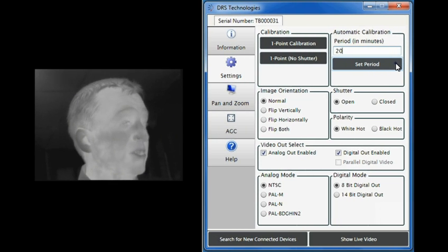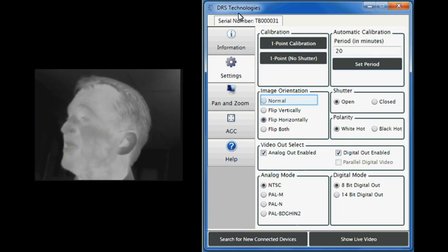Next is the image orientation. Click the radio buttons to choose normal, flip vertically, flip horizontally, or flip both. If I choose flip horizontally, you can see the image flip on the analog display. I'll set it back to normal.